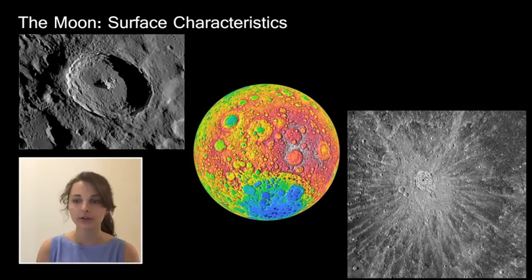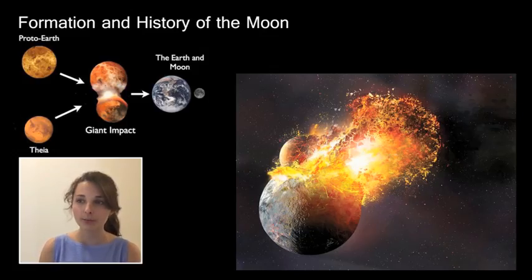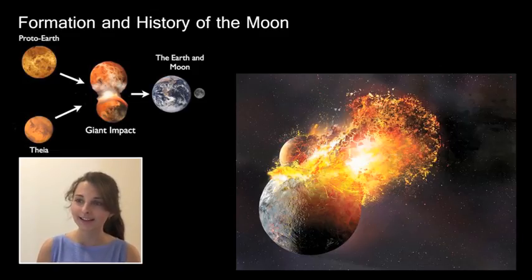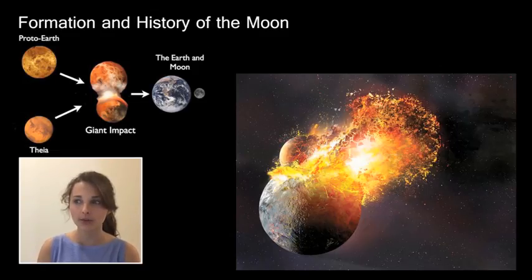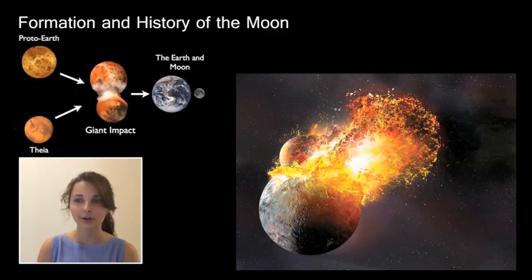There are many more craters on the far side of the Moon than the near side, as it is exposed to bombardment coming towards the Earth-Moon system. The formation of the Moon has long presented questions to scientists, as the Moon is the largest satellite relative to its host planet in the Solar System. One of the most favored explanations is the giant impact hypothesis, which posits that the Moon was created when a large body collided with Earth, breaking off a significant amount of material that then coalesced in orbit around Earth.